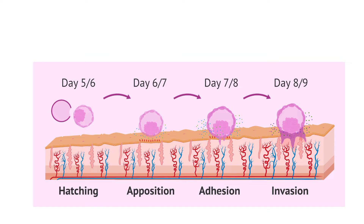Then adhesion occurs, in which the trophoblast adheres by penetrating the endometrium with the protrusion of trophoblast cells. Then invasion, in which it invades into the uterine stroma.